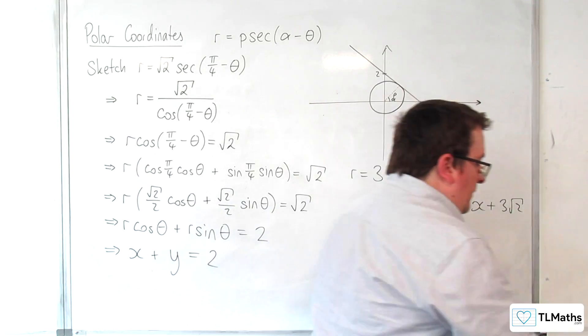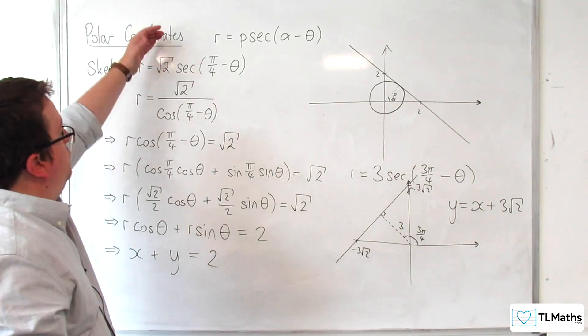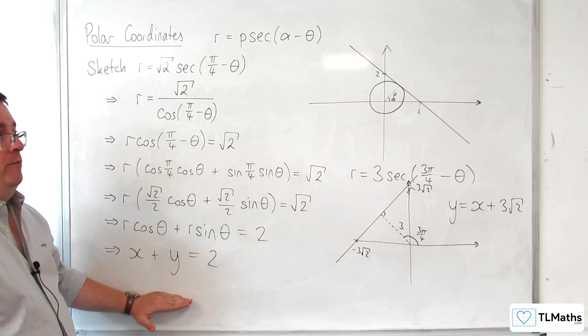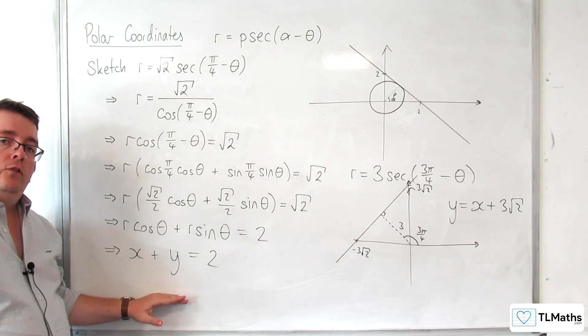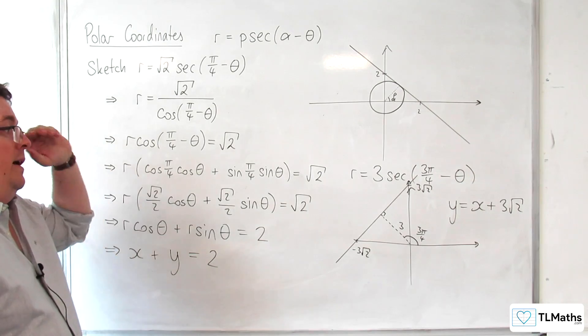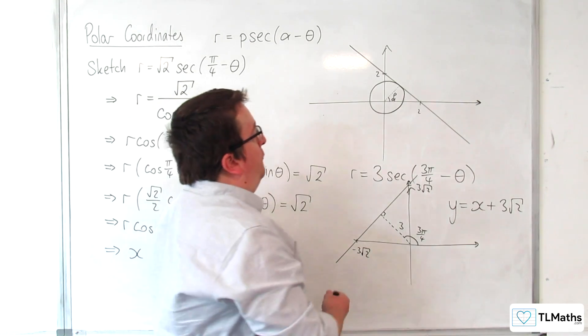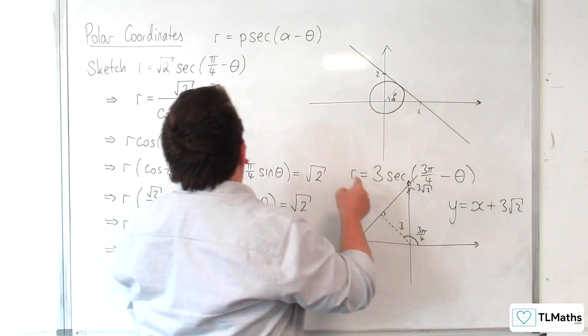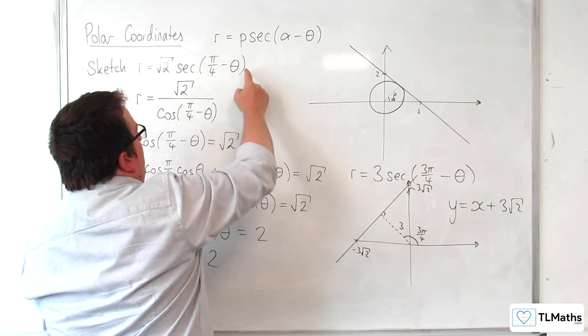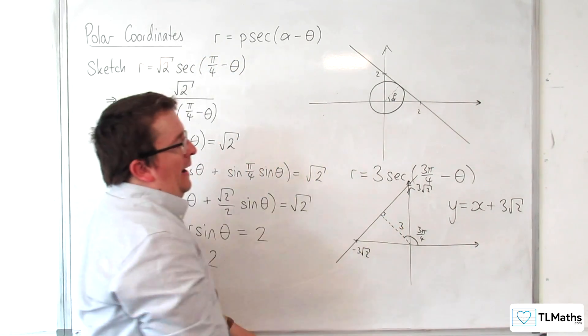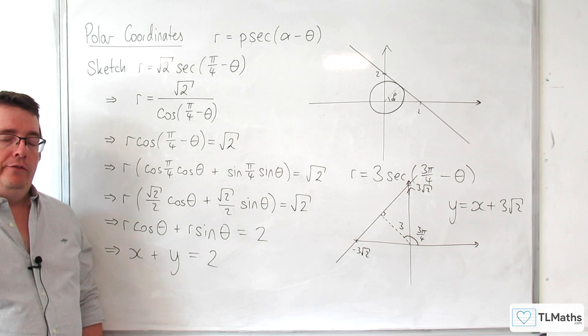So going through the conversion to Cartesian form tells you what type of graph this is. But you can then infer from it how you can go directly from this format to a sketch of the graph.